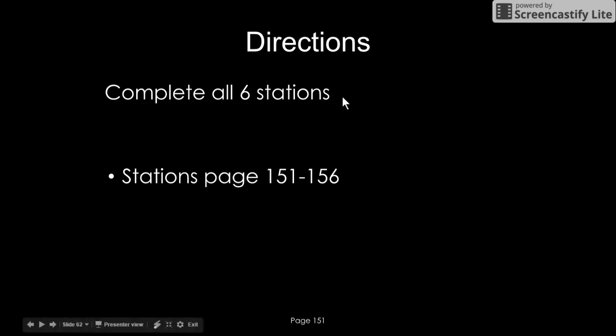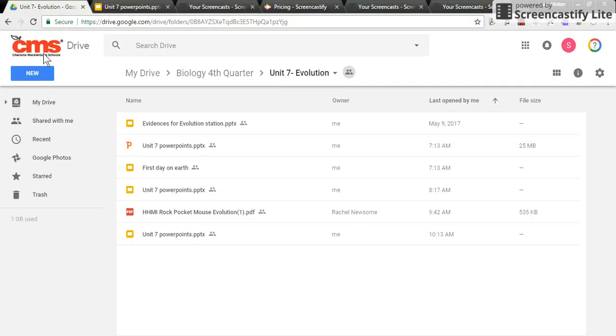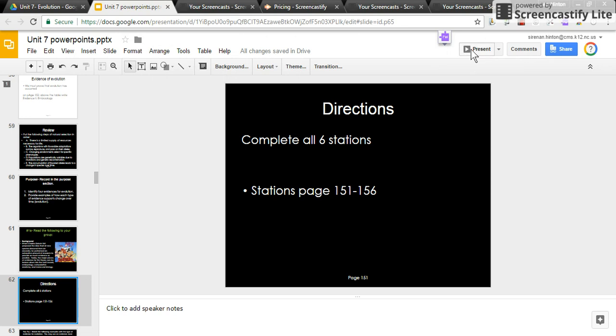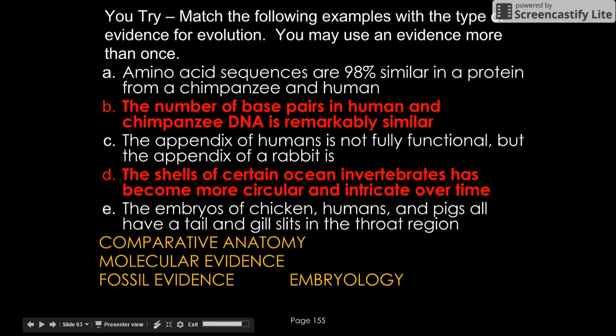Then we did stations - six stations around the room that cover page 151 all the way to page 156. If you don't have the stations complete, in our Google folder, open 'Evidence for Evolution Station' and complete those before you come to class tomorrow. I'm going to start on page 157. At the bottom of page 157, you did a little practice. On page 158, you did practice as well - mechanisms of evolution, so how things change or why things change.